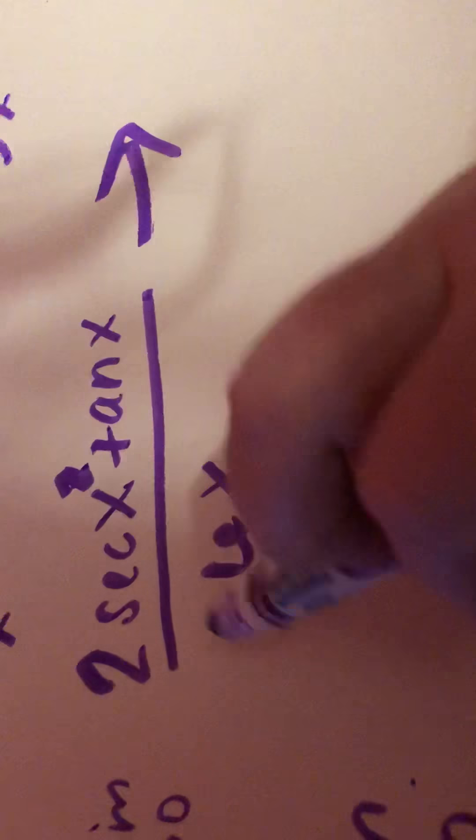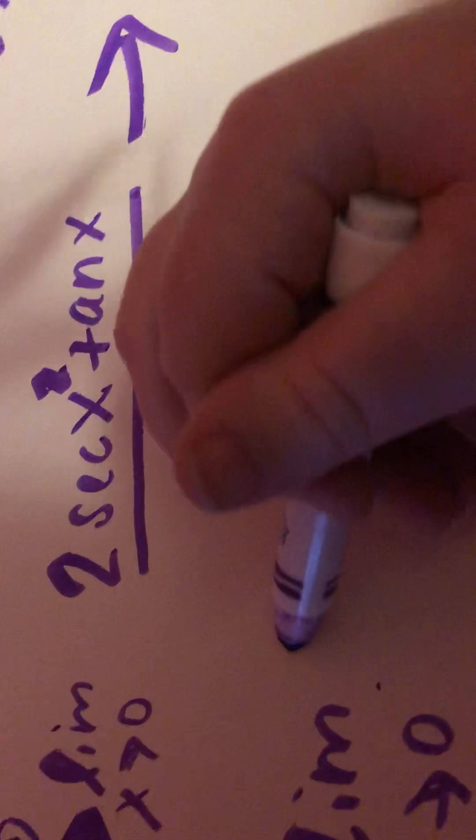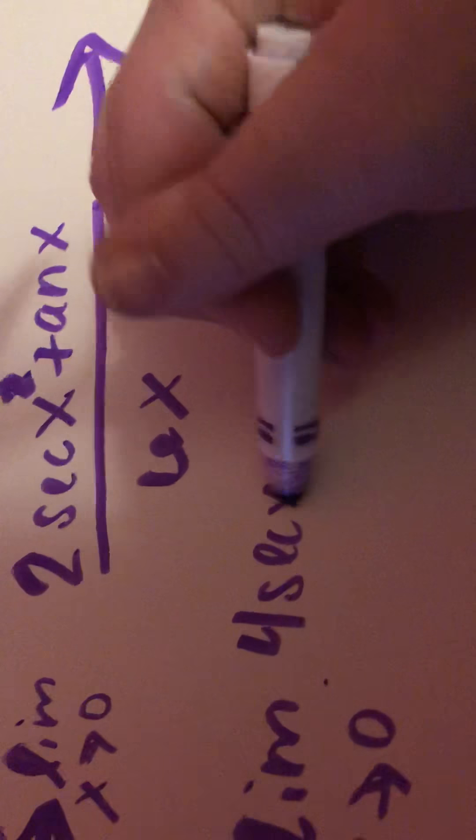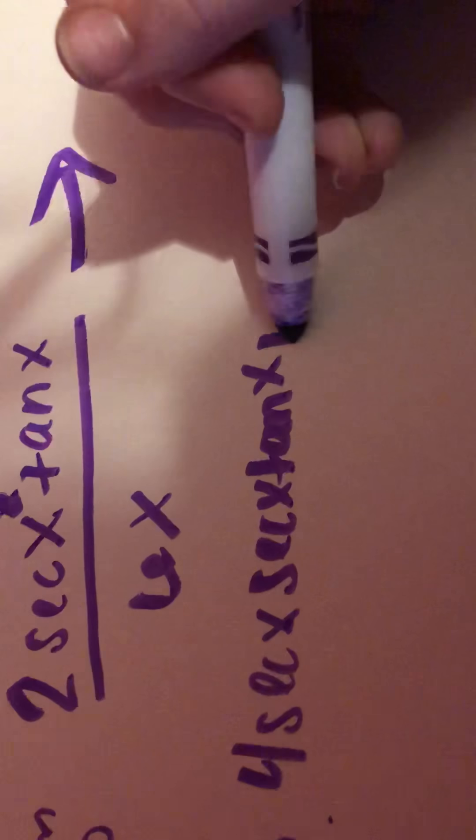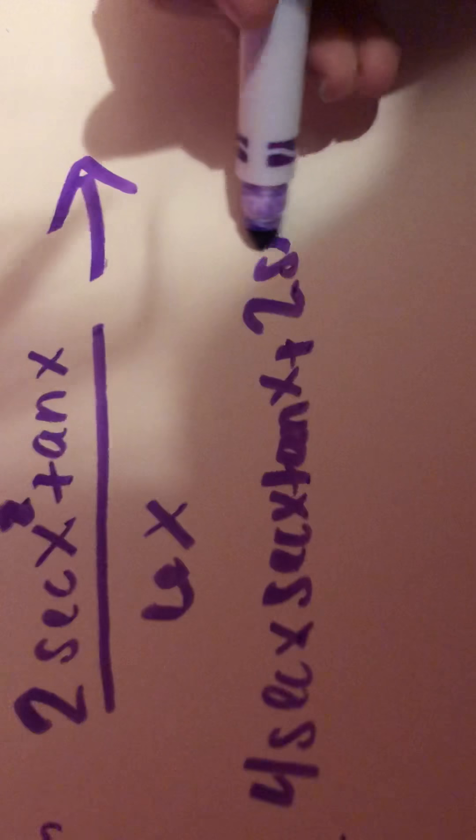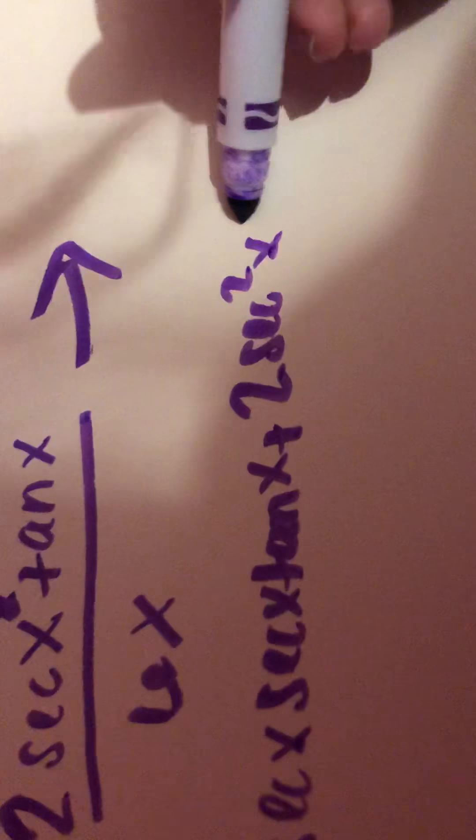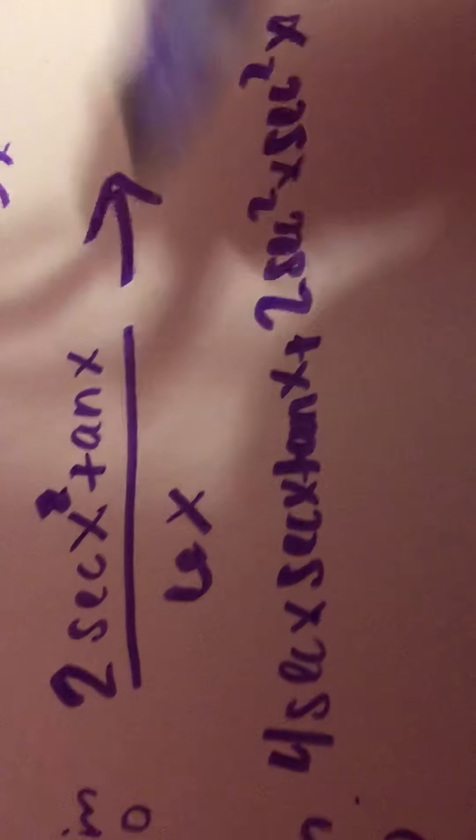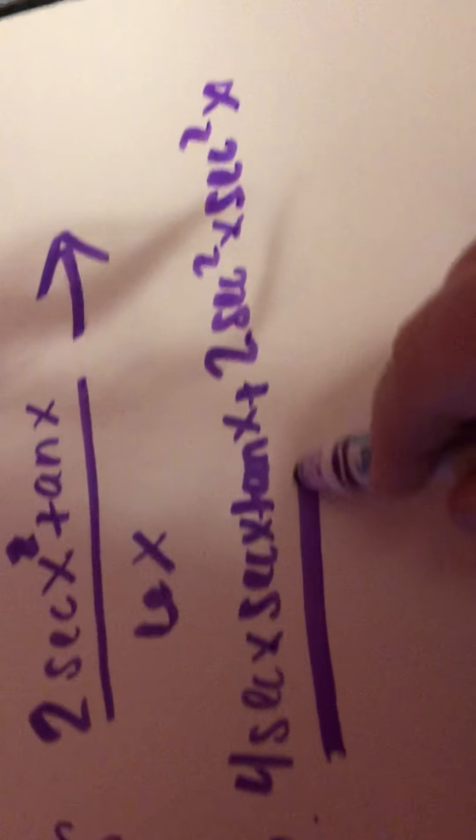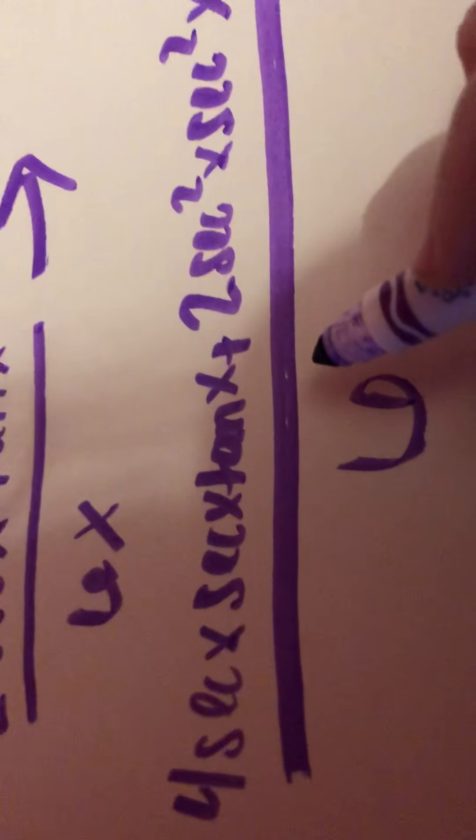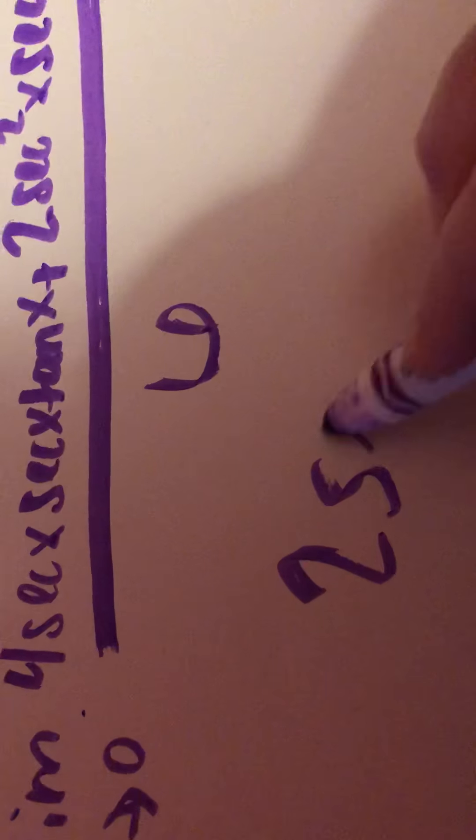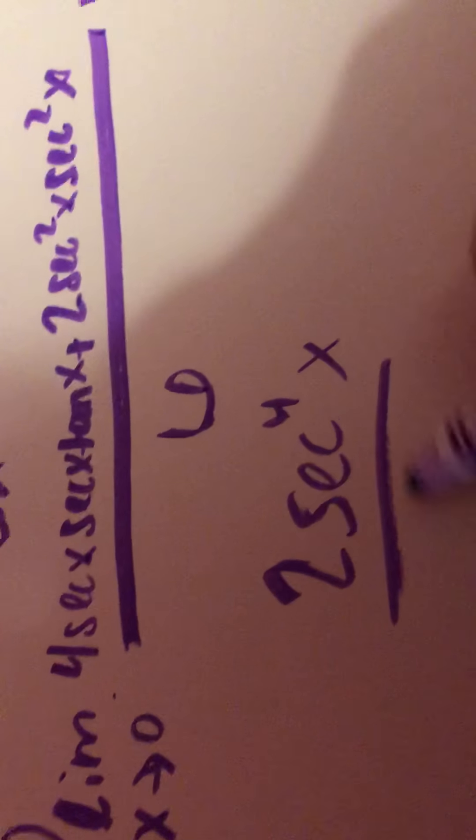So now to find the derivative of the top, we get 4 secant x times secant x tan of x plus 2 secant squared x. So we get 2 secant squared x, now using the product rule, over 6. When we simplify that, we get 2 secant to the 4th x over 6.